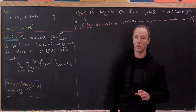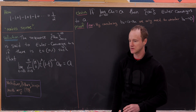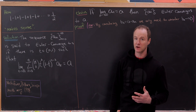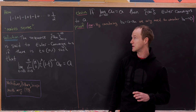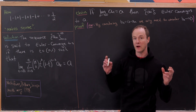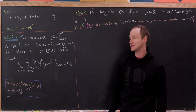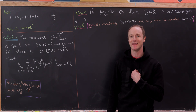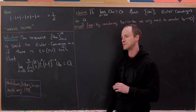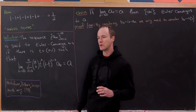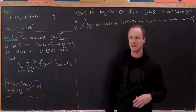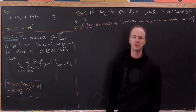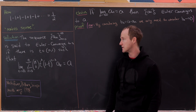We're going to do that with the notion of Euler convergence. We can't use regular convergence because of course, using regular convergence, this series does not converge. So what is Euler convergence? We're going to define it for sequences, but that's okay because you can turn a series into a sequence by looking at a sequence of partial sums.